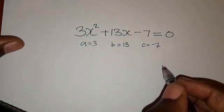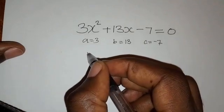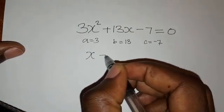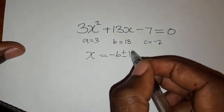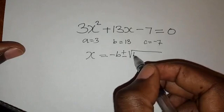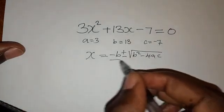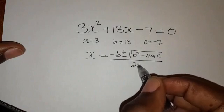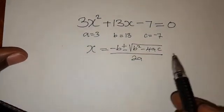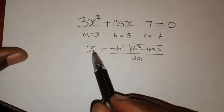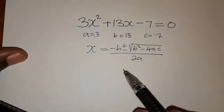So now the quadratic formula is x equals negative b plus or minus the square root of b squared minus 4ac, then everything over 2a. That's the quadratic formula that we are going to use. We are saying x because we are finding the value of x.